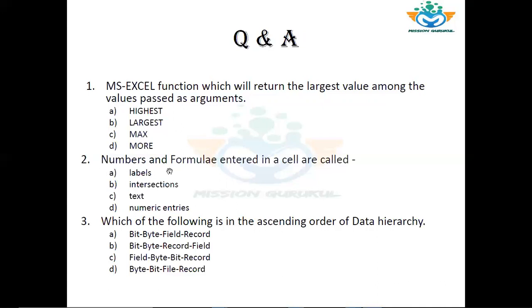Question number 2: Numbers and formulas entered in a cell are called — Levels, Intersections, Text, or Numeric Entries? Numbers and formulas — the number is numeric, so the correct answer is Numeric Entries.